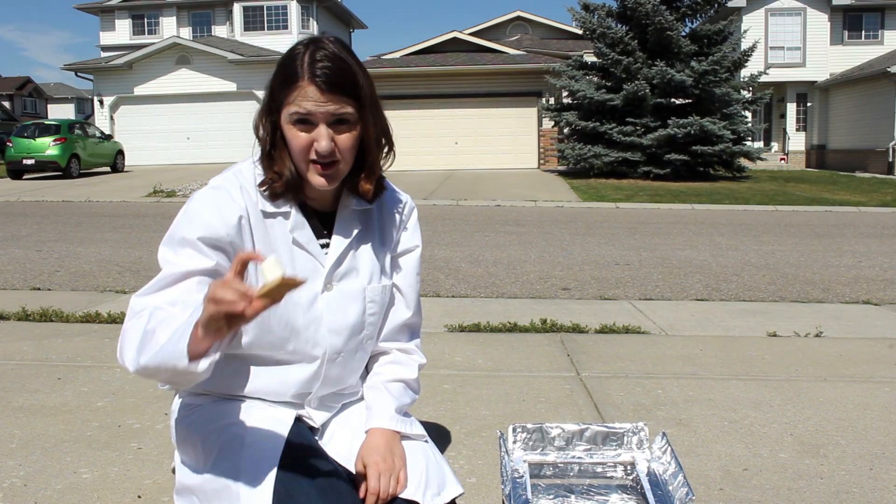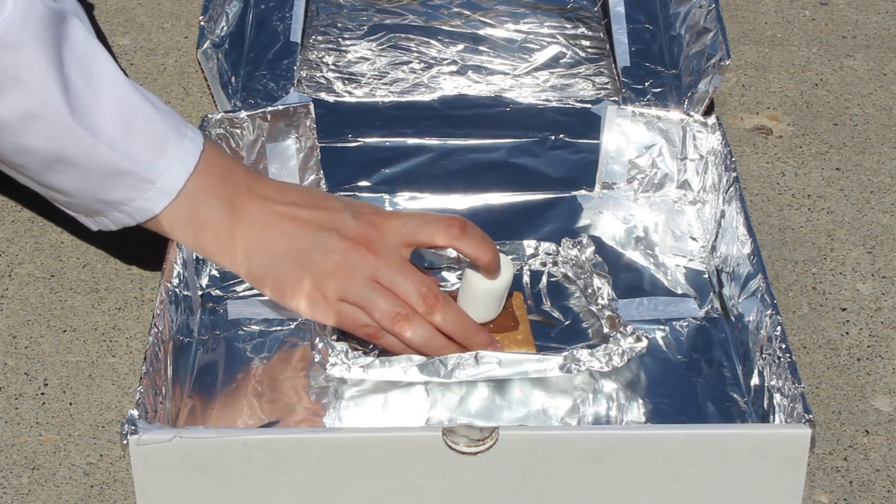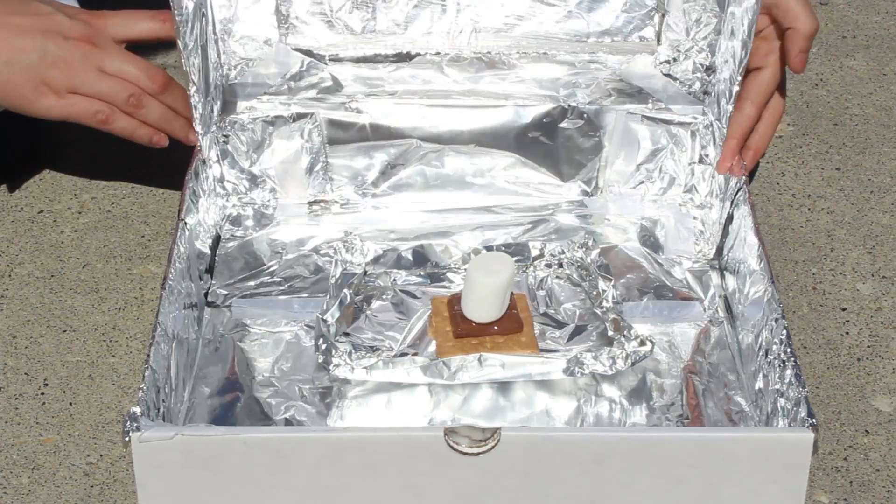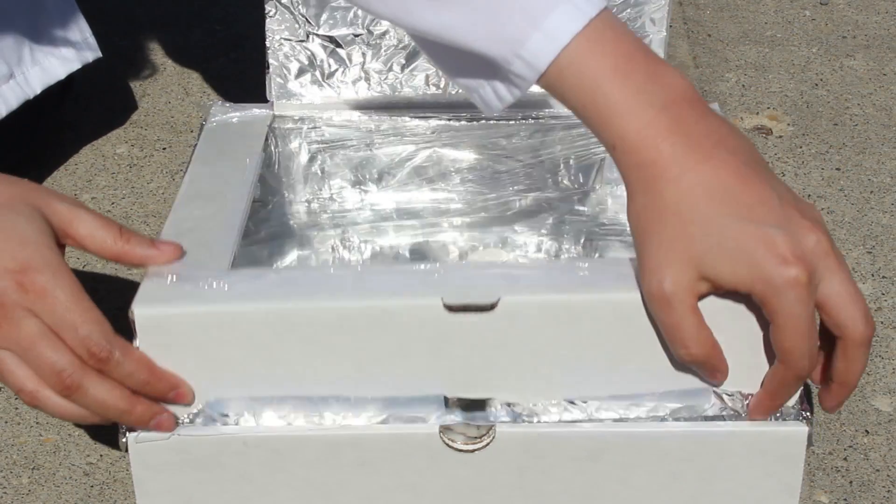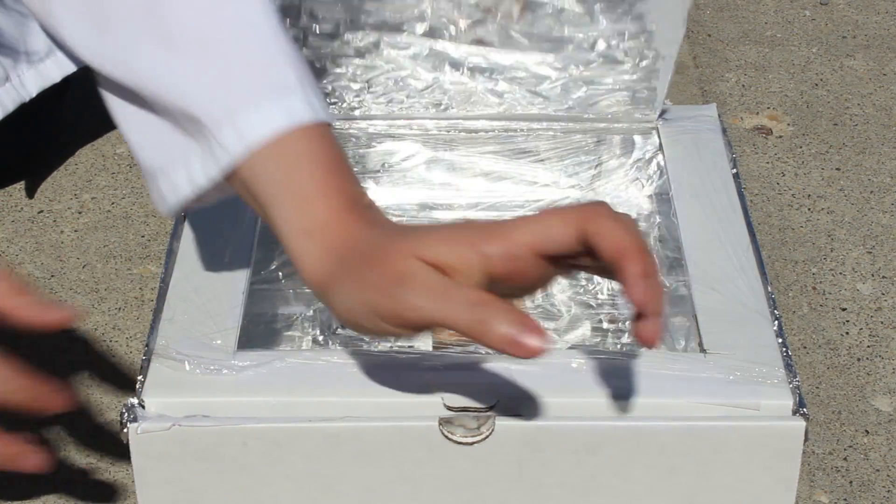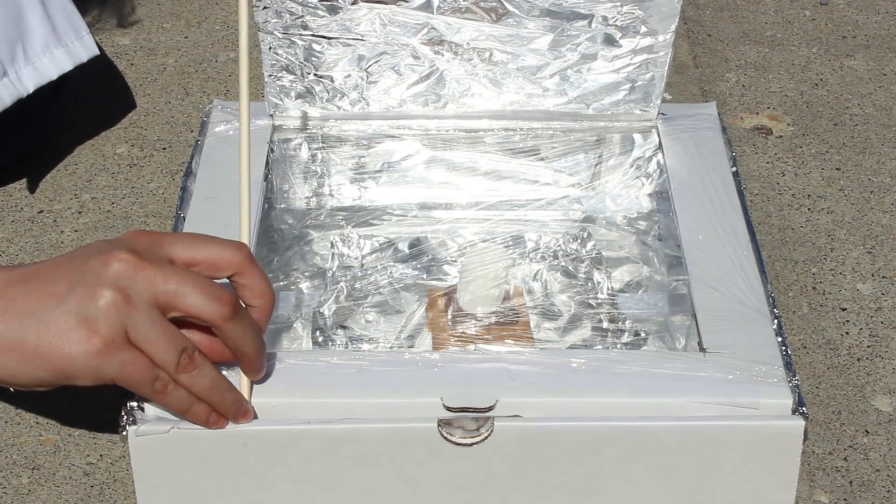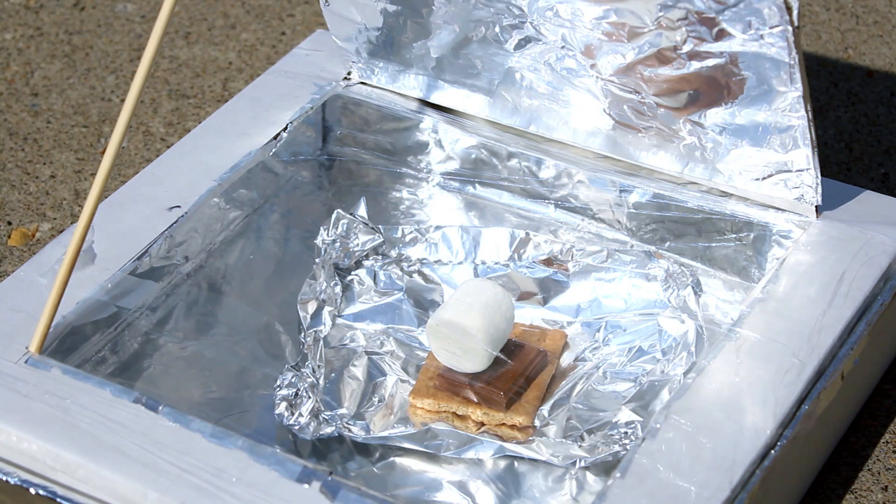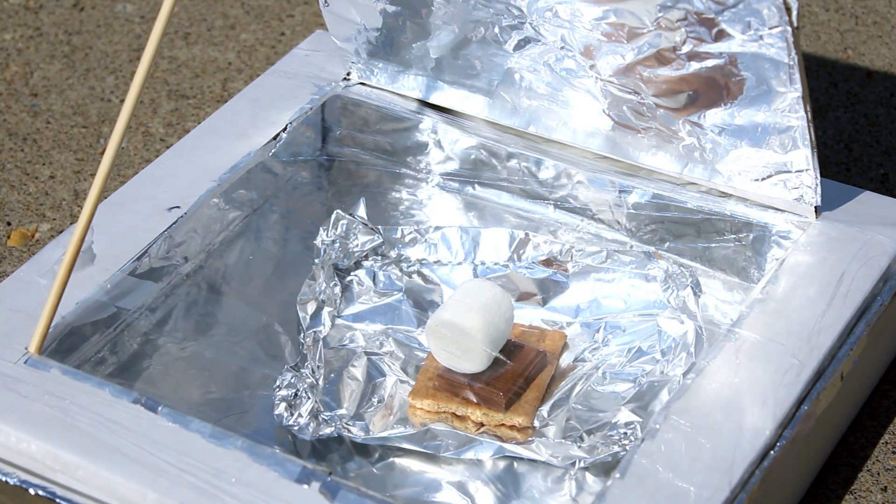Now that we're outside, you're going to take your s'more and put it into the solar oven. Then you're going to close the lid and prop open the top with dowels. Depending on the temperature, it will take around an hour for the first s'more to melt.